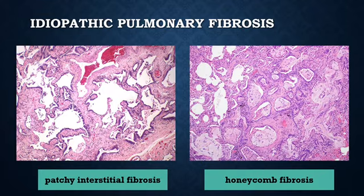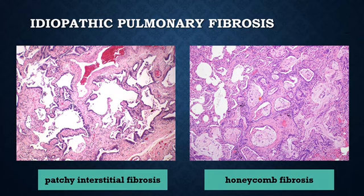Microscopically, the hallmark of IPF is patchy interstitial fibrosis, which varies in intensity and age — there are old lesions and new lesions. The dense fibrosis causes the destruction of alveolar architecture and formation of cystic spaces lined by hyperplastic pneumocytes, called honeycomb fibrosis. There is widening of the interstitium and fibrosis in the interstitium, loss of the lining epithelium in some areas, and formation of cystic spaces.